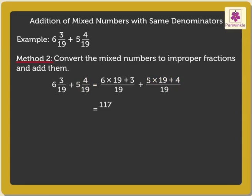Thus, we get 117/19 plus 99/19. Now, add the two fractions: (117+99)/19, which equals 216/19.